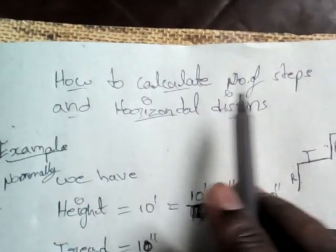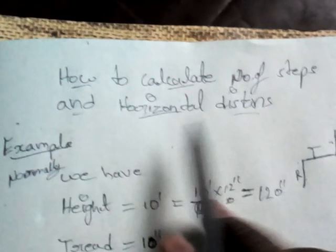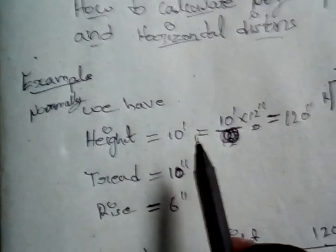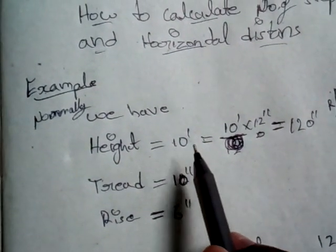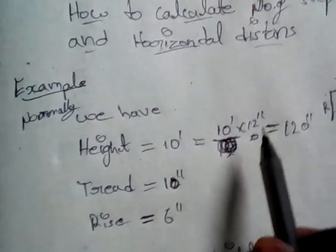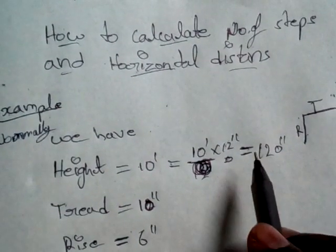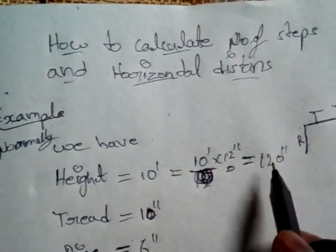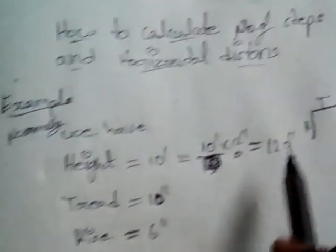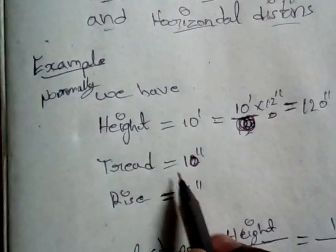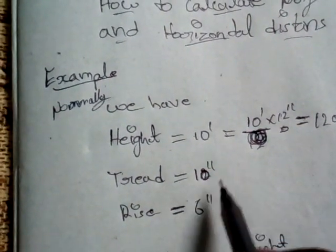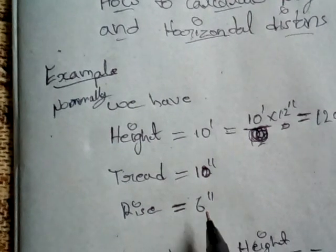How to calculate the number of steps and horizontal distance. Example: Height is equal to 10 feet, which is converted into inches — 10 feet into 12 inches equals 120 inches. Thread is 10 inches. Rise is 6 inches.